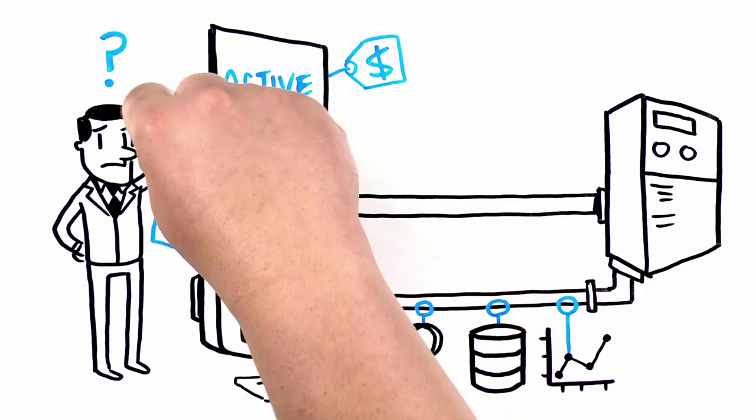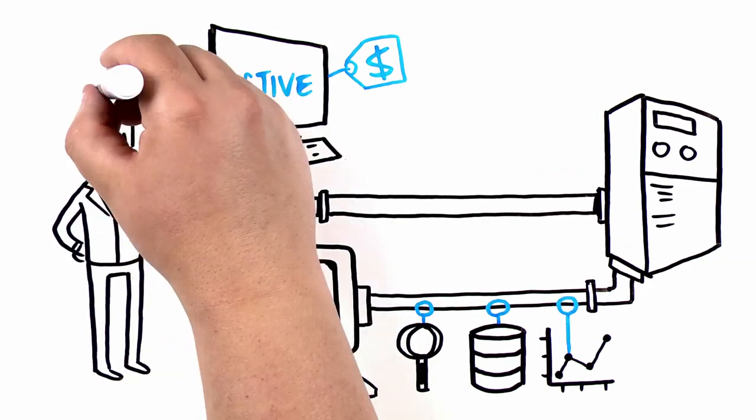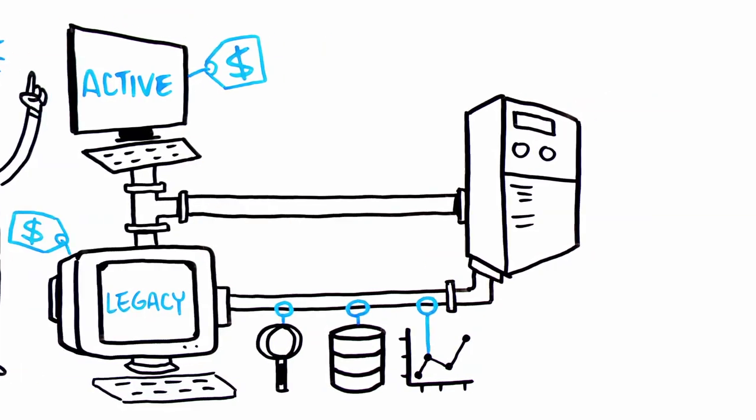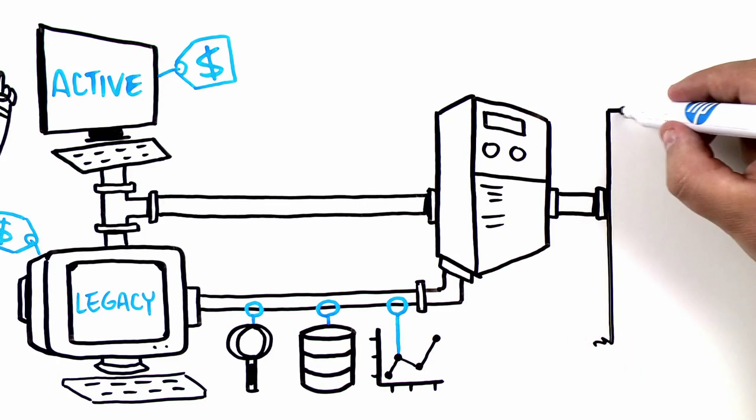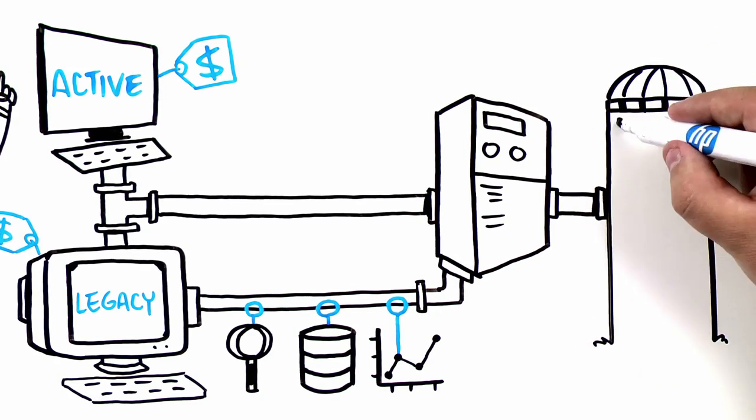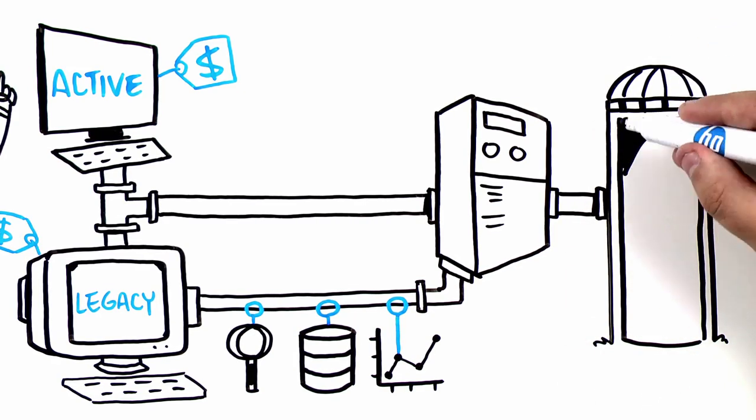This approach allows executives to simply and easily solve a finite problem, often proving out a business case before moving on to additional or enterprise-wide information governance projects in the organization.